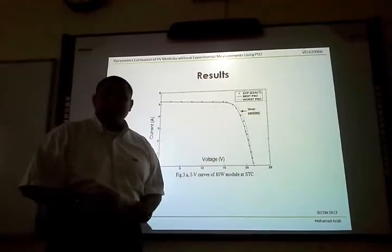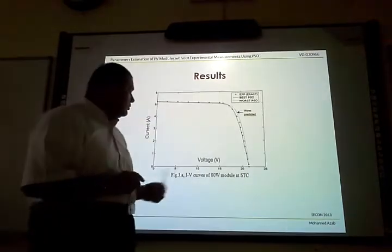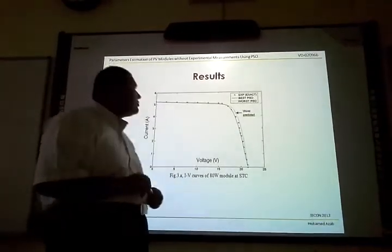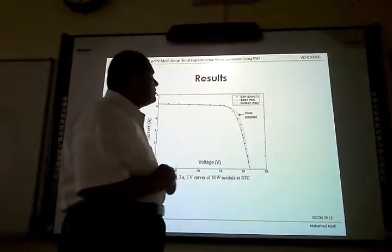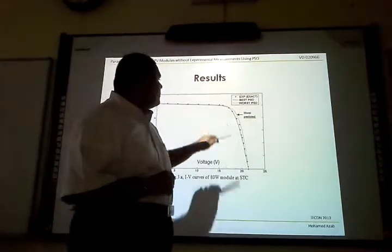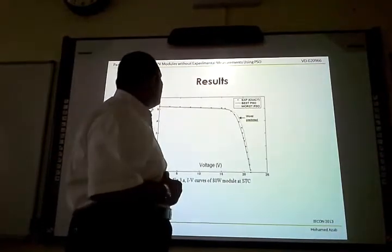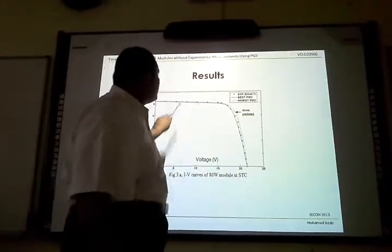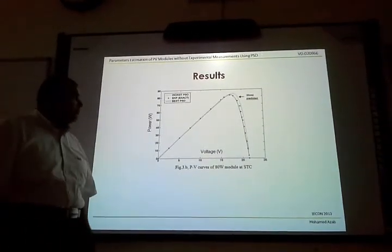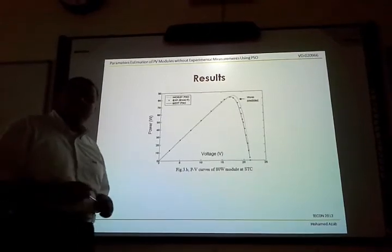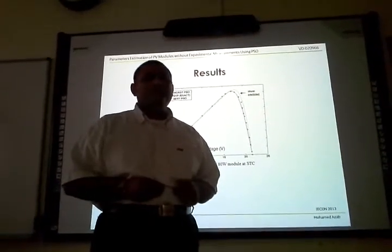These obtained parameters are utilized to plot the I-V curve of the PV module. We have KC200GT PV module. We plotted three curves: the exact curve from experimental data sheet, the continuous line which represents the best obtained solution, and the dashed line represents the worst obtained solution. We limited the curve to the power point region. We can observe that PSO gives results which are in good agreement with real data.